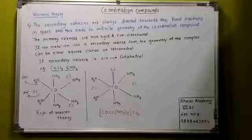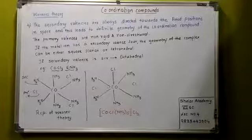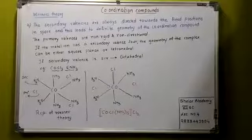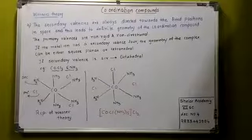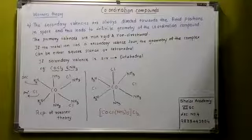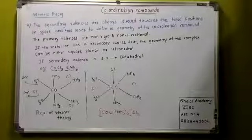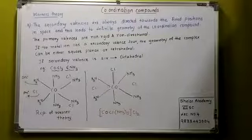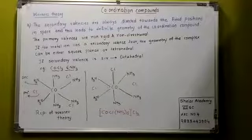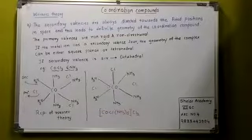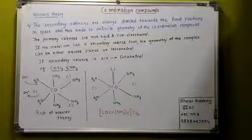Secondary valences are always directed towards the fixed positions in the space, which leads to a definite geometry. Now Werner dissolved cobalt chloride in ammonia solution and then he got different complexes of cobalt associated with different molecules of ammonia.